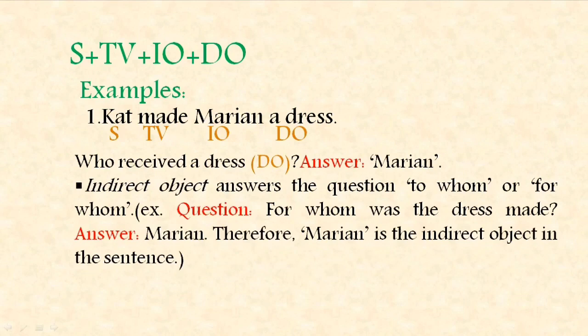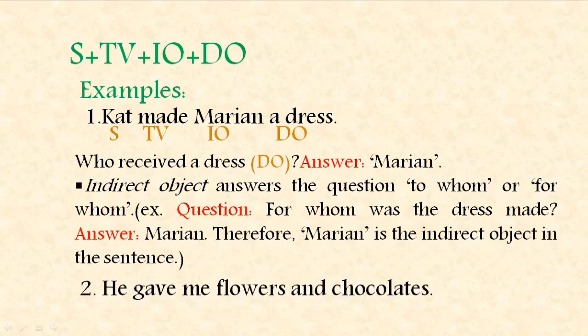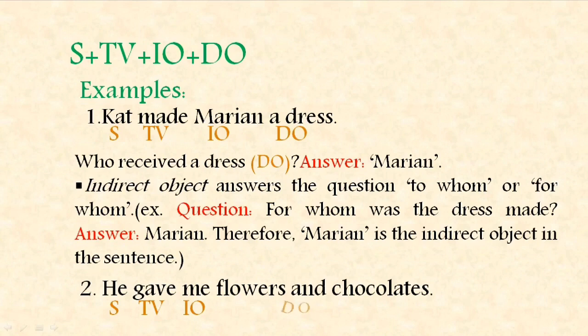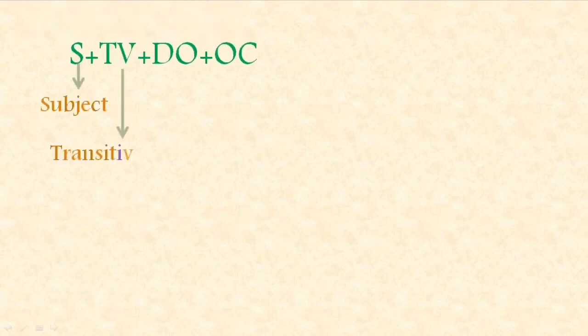'He gave me flowers and chocolates' — 'he' is the subject, 'gave' is the transitive verb, 'me' is the indirect object, and 'flowers and chocolates' are the direct objects. To whom were the flowers and chocolates given? To me — therefore 'me' is the indirect object.